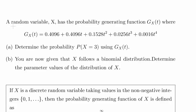In this presentation we are going to look at probability generating functions. A random variable X has a probability generating function gX of t where gX of t is given as follows: gX of t is equal to 0.4096 plus 0.4096 times t and so on.